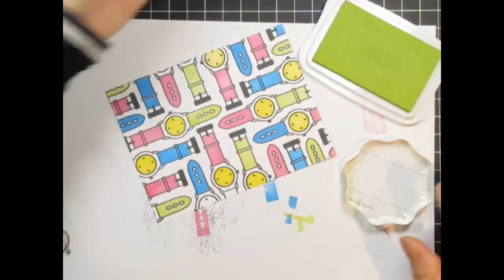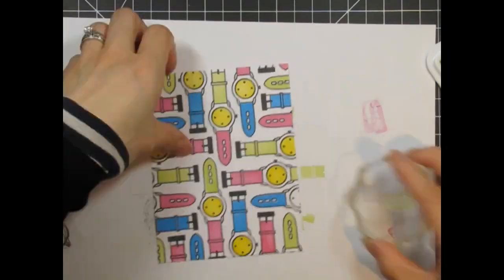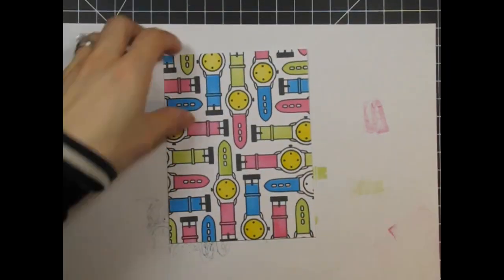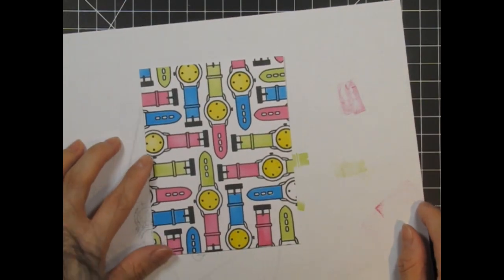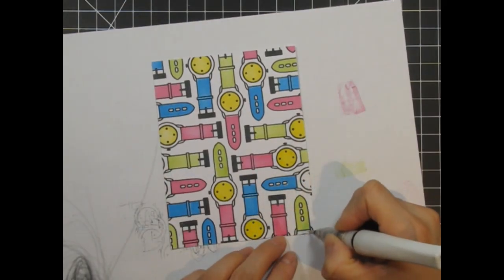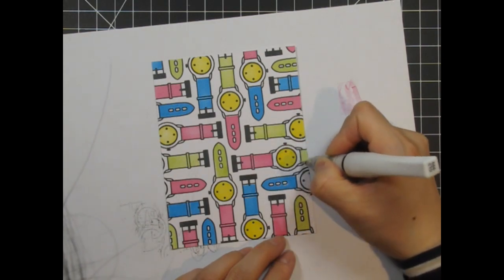After all the watches are filled in, I use a wink of Stella marker to add shimmer to the perimeters of the clock faces. You may be able to see a bit of the shimmer on the video. I really love how it adds that extra little something.